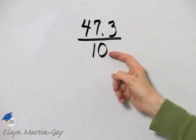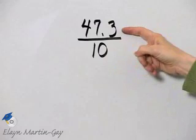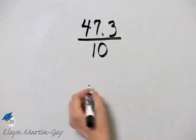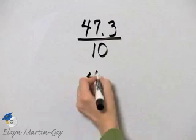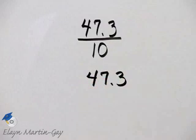Now, because we are dividing by 10, notice the result will be less than 47 and 3 tenths. And as a matter of fact, dividing by a power of 10 can be performed using a shortcut method just as multiplying by a power of 10.